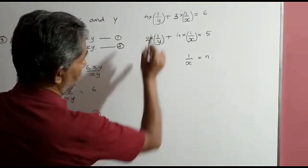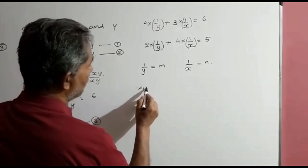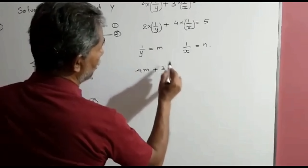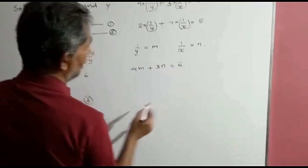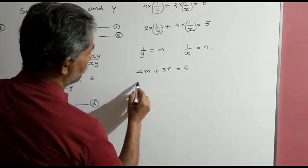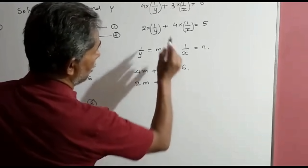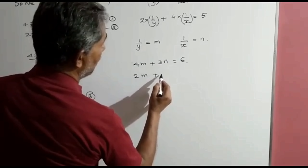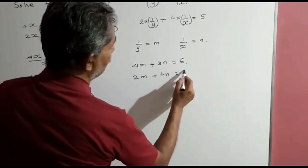Thus we reduce equations 1 and 2 into two linear equations. Now we solve by elimination method. We take the LCM of the coefficients of m, which are 4 and 2, giving LCM 4. We multiply the first equation by 1 and the second equation by 2. So the equations become 4m plus 3n equals 6, and 4m plus 8n equals 10. Eliminating m by subtracting, we get minus 5n equals minus 4. Therefore n equals minus 4 upon minus 5, which is 4 upon 5.